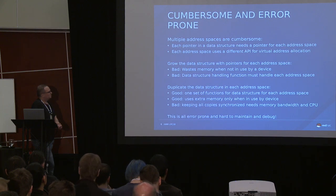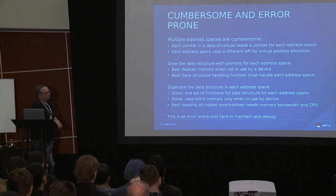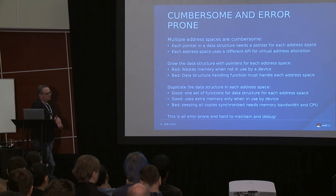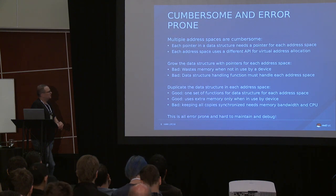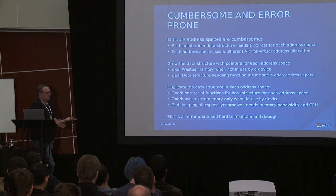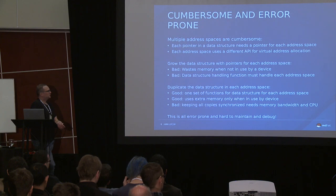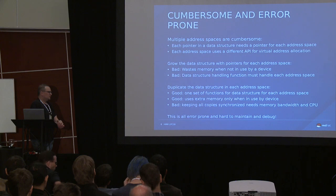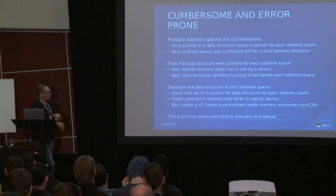Obviously you're wasting memory by adding more fields to your data structure just to accommodate all the address spaces. The other way is to duplicate the data structure on each address space — every time you have a list, you just copy the list to the GPU address space. The advantage here is you can use the extra memory only when you're actually actively using the data structure on your GPU.